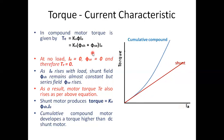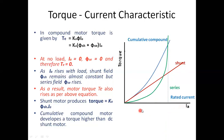The series motor torque curve is also drawn for the rated current, giving an overview of the torque-current characteristics of different motors — shunt, cumulative compound, and series — from this comparison curve.